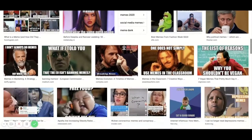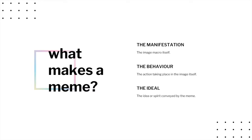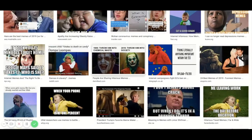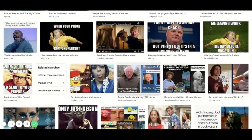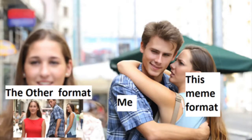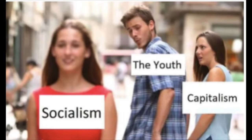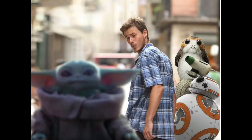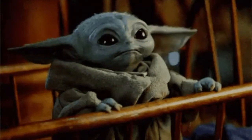The image macro can be remixed, but the basic elements remain the same. As Davidson explains, one person acts and another copies that person exactly — other times the replication is less exact. He elaborates that the meme consists of three components: the manifestation, or the image macro; the behavior, the action in the meme itself; and the ideal, the idea conveyed by the meme. For Davidson, as long as one of those three components is passed on, the meme is replicating, even if mutating and adapting. Looking at the distracted boyfriend meme: the behavior continued through the socialism distracted boyfriend, and the ideal continued into the baby Yoda distracted boyfriend.